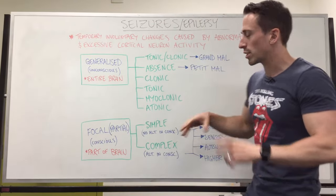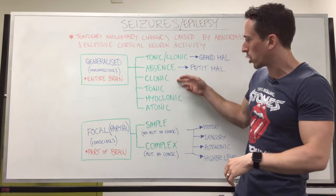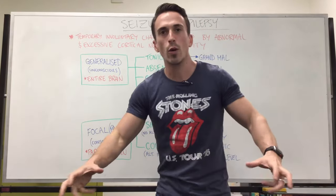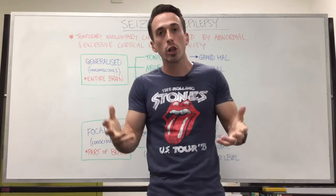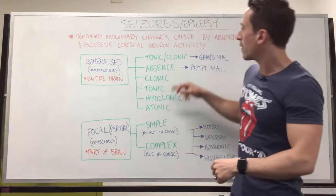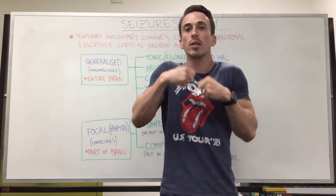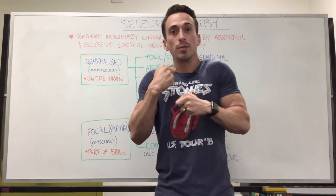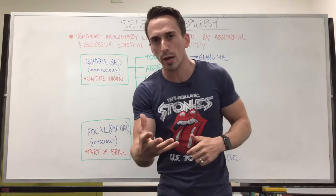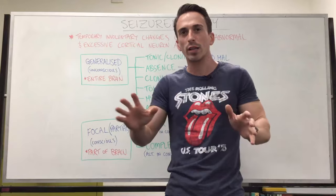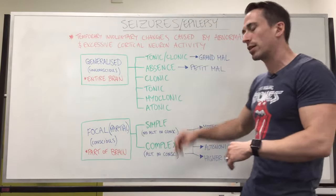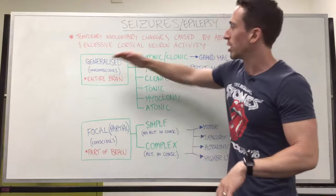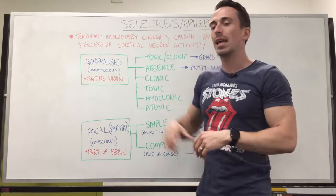The remaining types of generalized seizures are less common but have similar terms: clonic, tonic, myoclonic, and atonic. Tonic means a prolonged contraction of your muscles. Clonic is more of a rhythmic contraction and relaxation. A myoclonic seizure involves a single muscle or group of muscles contracting very quickly — a quick contraction and then it stops. An atonic seizure is where you lose all contractile ability and the individual often just falls to the floor. Again, all of these are generalized, meaning the entire brain is involved, resulting in unconsciousness.